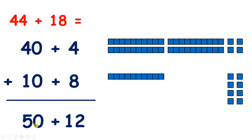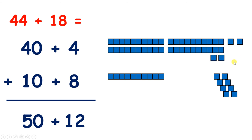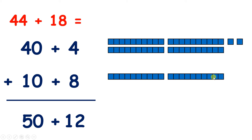So now we have 50 plus 12. But what can we do with these 12 units? We can regroup them into 1 ten and 2 units. So we now have 6 tens and 2 units. 50 plus 12 is 62.